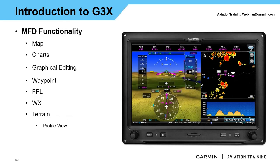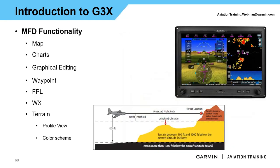We can go over to the terrain page. This isn't topographical like the map page — it's showing whether we're above or below terrain relative to our position. We also have the profile view: it shows the current aircraft and any terrain that could affect us along the route of flight. Following our standard fixed-wing layout: yellow means we're 100 to 1,000 feet above terrain; red means we're within 100 feet or the terrain is above us. Standard color scheme.